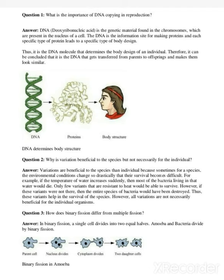DNA is the deoxyribonucleic acid. It is the genetic material found in chromosomes, present in the nucleus of a cell. DNA carries information from one organism to another. It is the site for making proteins — DNA forms RNA, and from RNA proteins are formed. These proteins lead to a specific type of body design, and that is why the DNA molecule determines the body design of an individual.